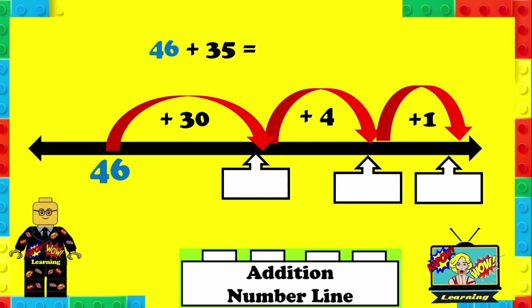Try to do this one. So we've got 46 this time plus 35. Okay, so we're going to start with 46. You can pause this and then play it to see if you got it correct. So 46 plus 30 is 76.